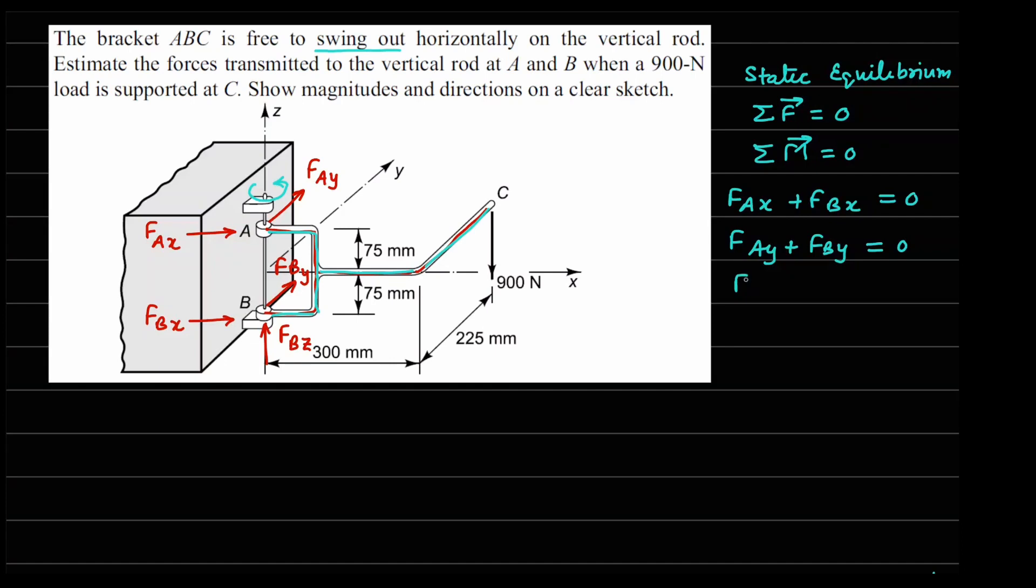In the z direction, we have FBZ and minus 900 newtons equals to 0. Because this force is acting downwards, that is why negative direction. So if you look at the number of unknowns now, we have total 5 unknowns appearing here and we have only 3 equations. That means we need to look for 2 equations from the moment balance.